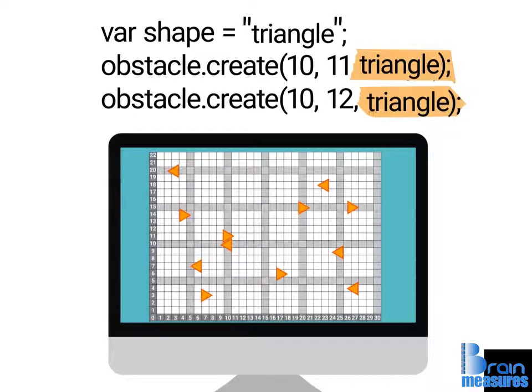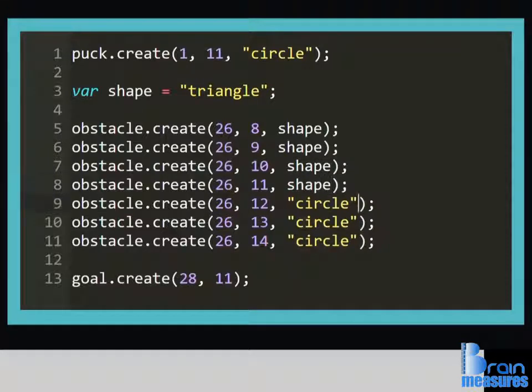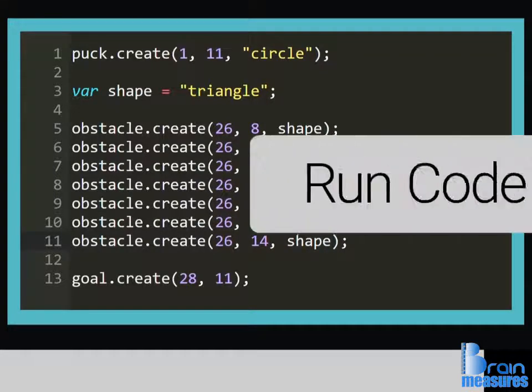We're ready to try this ourselves. If you look in the code editor, you'll notice that the variable shape is already there. All you need to do is replace each word circle in the obstacle.create instructions with the variable shape. Remember, don't enclose the word shape with quotation marks. Once that's done, hit run code.